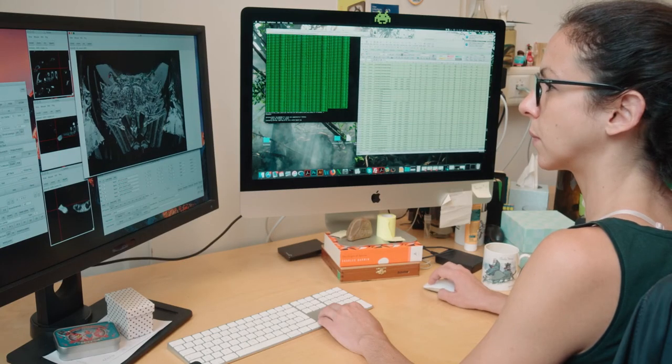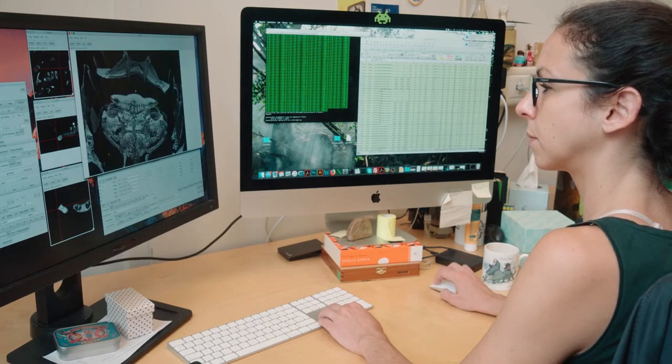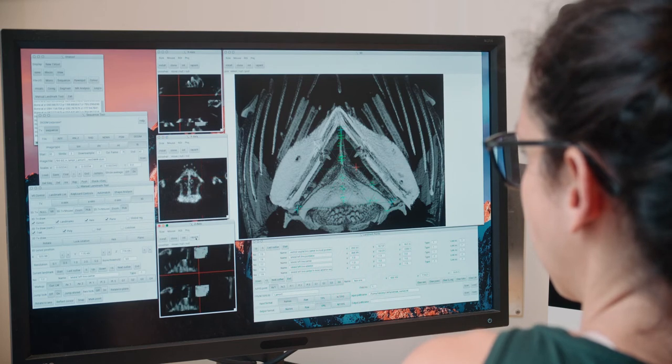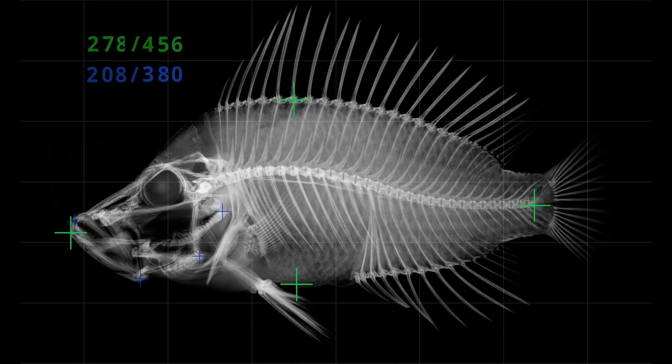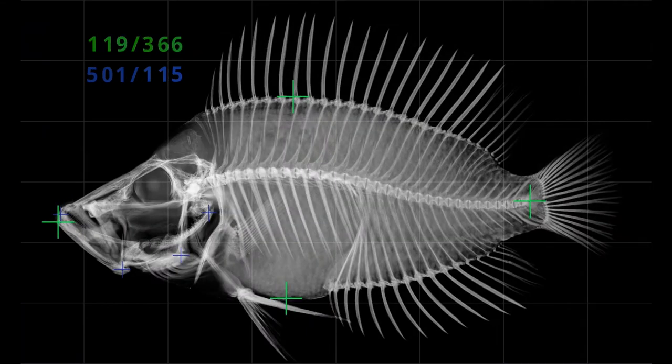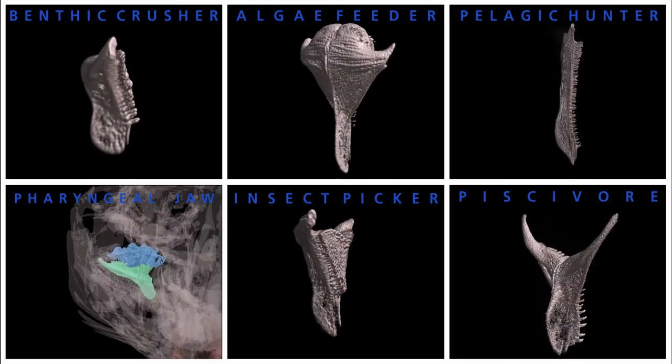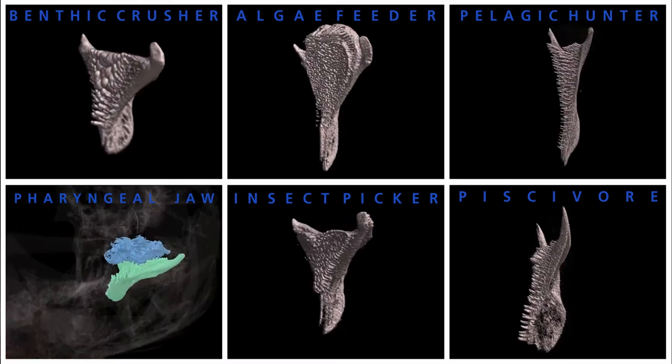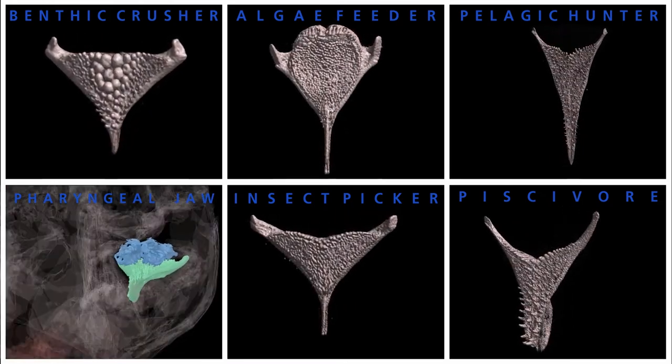Finally, we used microcomputed tomography scanning to study morphological evolution in cichlids, focusing on the overall body shape and the pharyngeal jaw apparatus. This bony structure is situated in the pharynx of cichlids and is adapted to processing different food types.